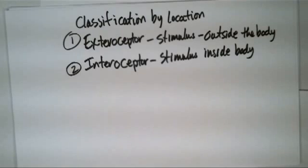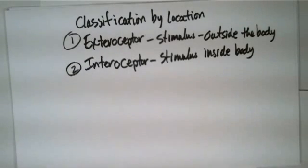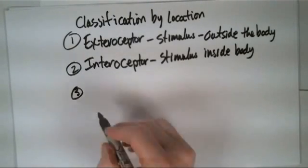Usually we're not aware of some of these interoceptors. Blood glucose level drops to a certain point, we may not be physically aware of that, but there is this receptor system inside our body that helps respond to that stimulus. And then the third type, if we classify it by location, is proprioceptor.